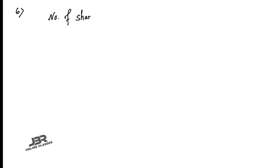In sum number six, a lady holds 1800 rupees-100 shares of a company that pays 15% dividend annually. So the number of shares = 1800, the nominal value (face value) of each share = ₹100, and the rate = 15%.